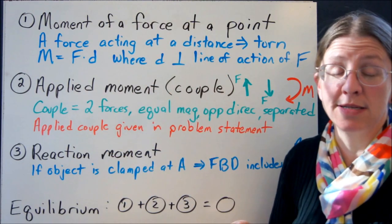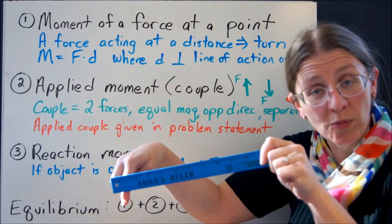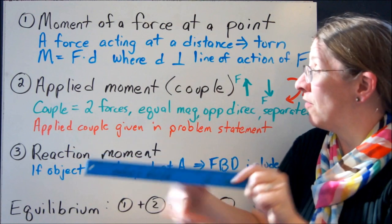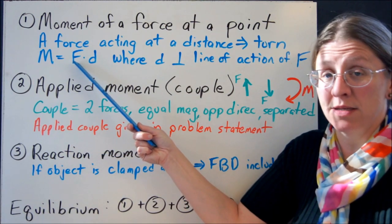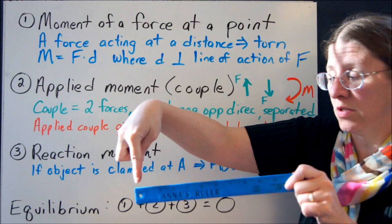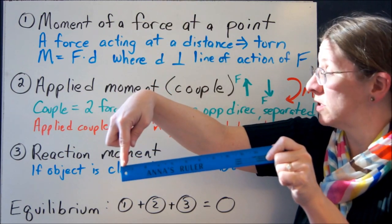A force acting at a distance causes a tendency to turn. The tendency to turn is called the moment. It is a vector. The magnitude of that vector is the force times the distance, as long as that distance is perpendicular to the line of action of the force.